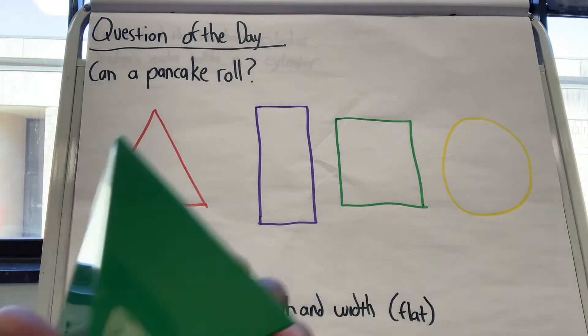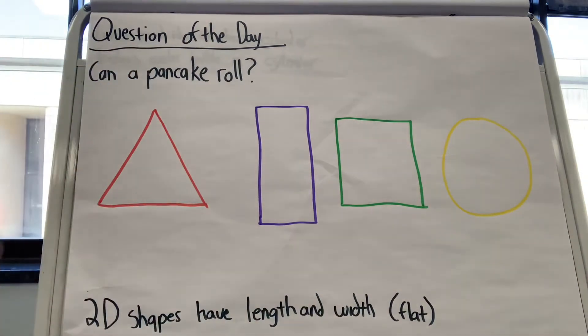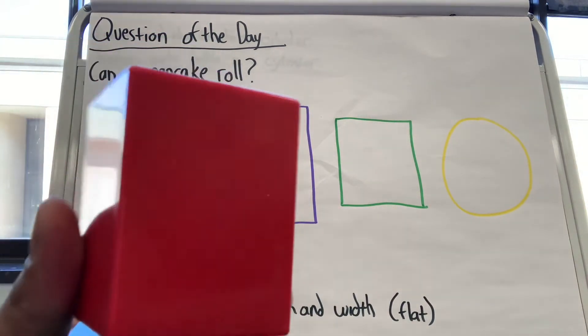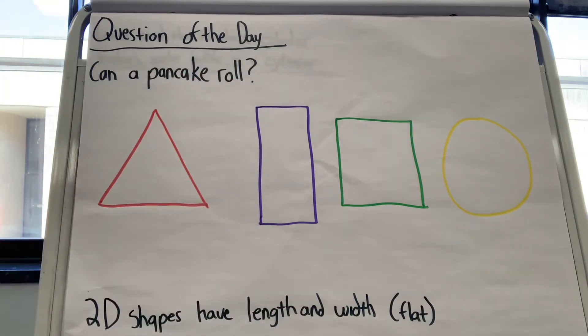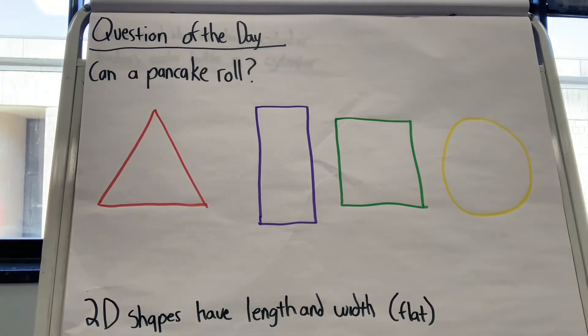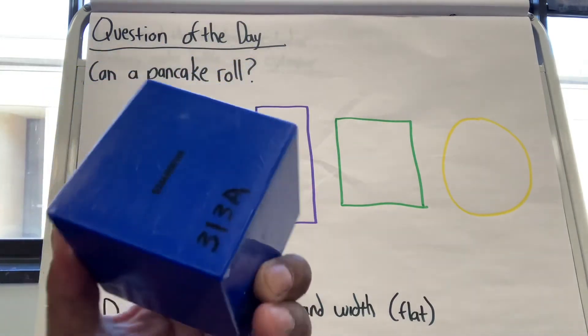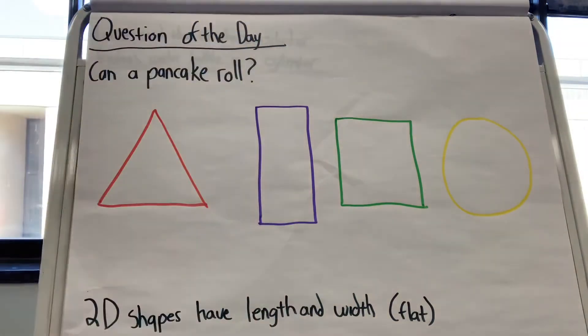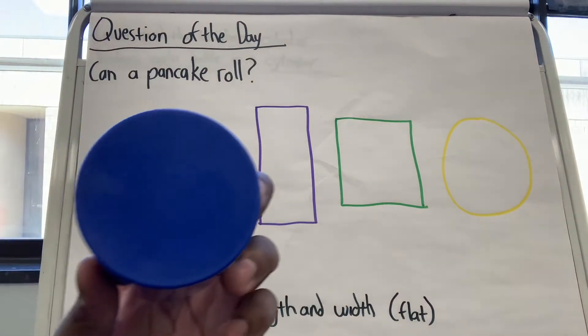So we have a pyramid, a cuboid, a cube, and a cylinder.